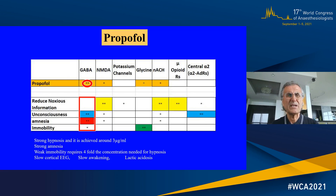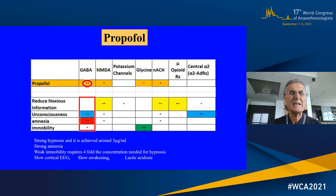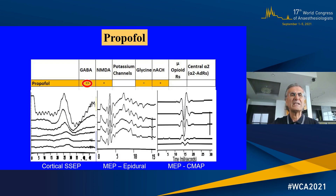We have four components: non-pain, unconscious, amnesia, and immobility, shown on the left side. There are multiple receptors on top, and each receptor works differently to produce one of these four components. Propofol works on GABA receptors — as you can see in the red circle — and works very well on GABA to create unconsciousness and amnesia, but provides little analgesia and very weak immobility. If we use very high doses of propofol, we may see a decrease in signals, both sensory and motor potentials.